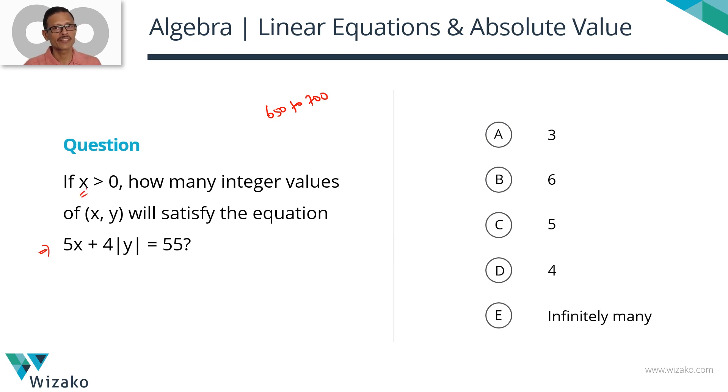How do we do it if we have only one equation? There could be infinite values which will make it work. There are certain added conditions which are given, which will help zero in to probably a finite number of values if choice E is not the correct answer. What are those things? One, it says that x is positive. Second, it says what are the integer values that x and y can take to make this happen?